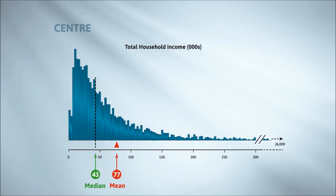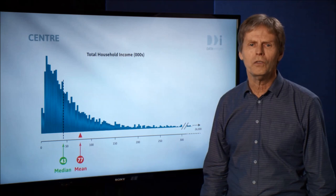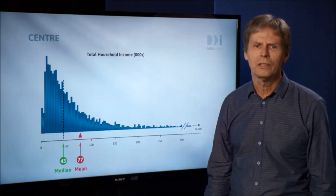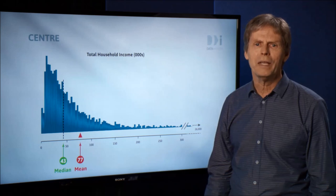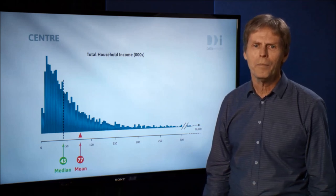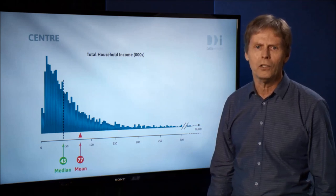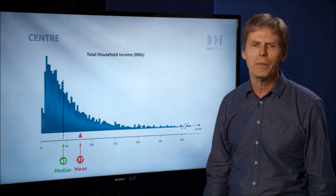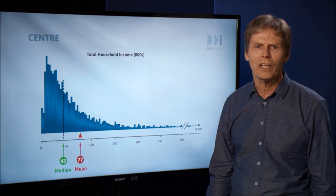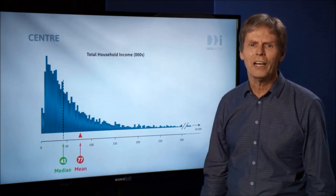This mean doesn't represent the common experience. Only 27% of these incomes fall above 77,000, with 73% below them. So which measure of center should we use? That depends on what we want to use it for. For incomes and many highly skewed variables, the median tends to be preferable because it better represents the common experience, or what is typical. Half of the people get less, half get more.